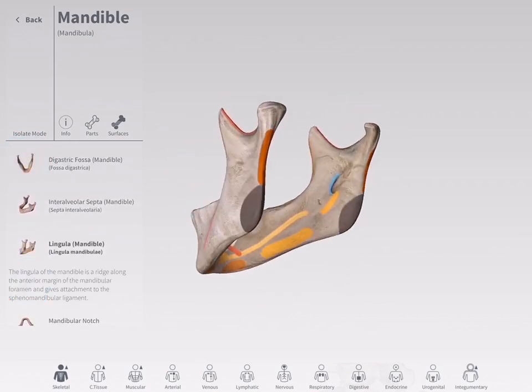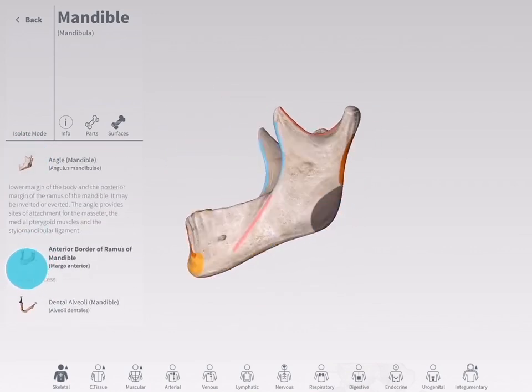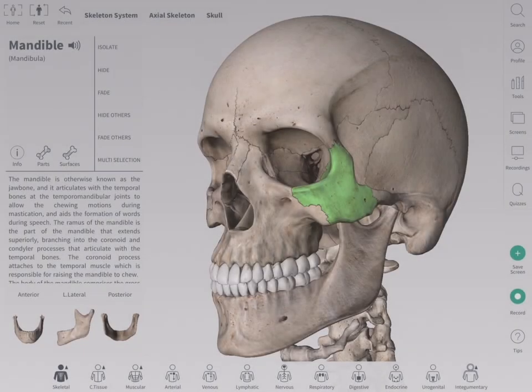Continue to explore the landmarks by tapping on either the model or an item in the list. Tap back to return to the main screen.